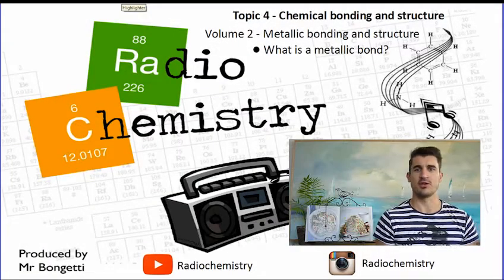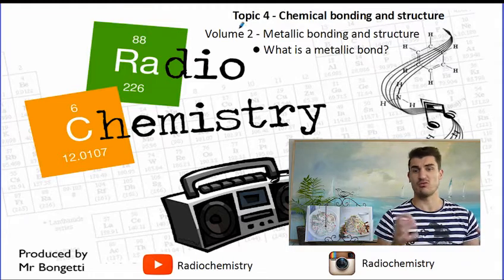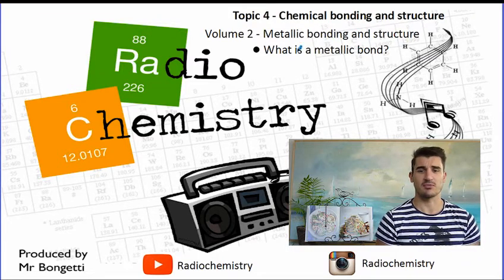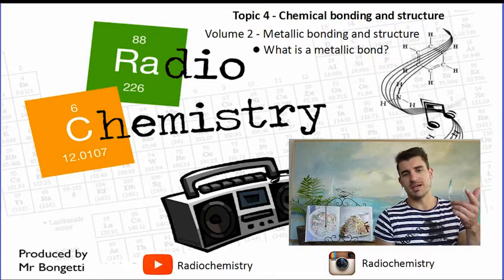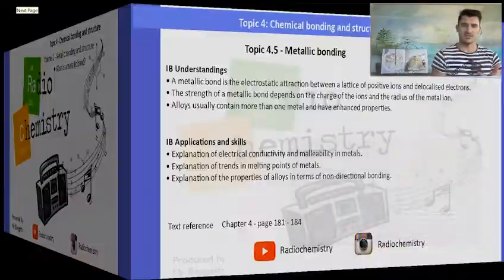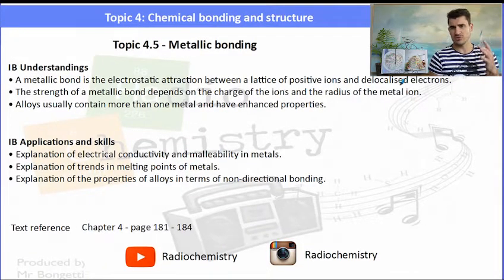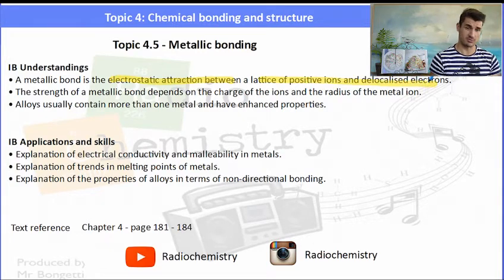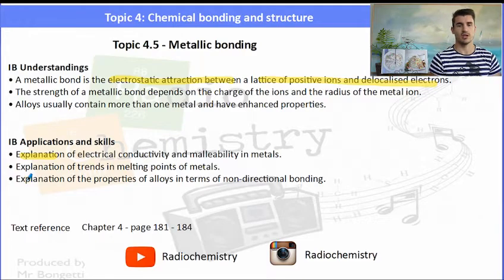So topic four, chemical bonding. We look at metallic bonding and we really just need to talk about what a metallic bond is. IB understandings and applications are listed on this page and students don't seem to pay as much attention to metallic bonding, but it always pops up on an exam. Make sure you know the definition of what a metallic bond is and then we need to do some explanation of a few of the properties.